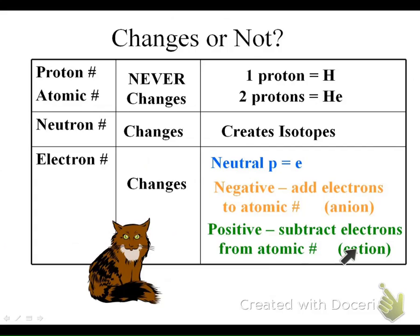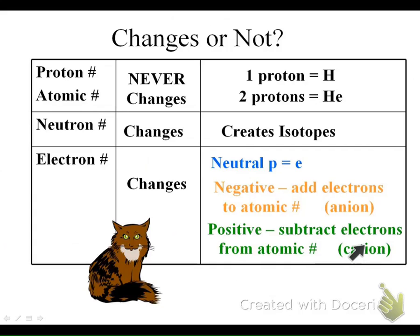One way to remember this: cats are positive — that's a silly way to remember it. And number two, cation has a T in it, and that T looks like a plus sign. That helps you remember that cations are positive.